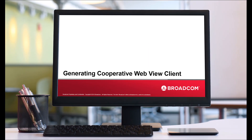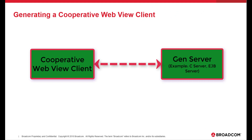Let's now generate a cooperative WebView client. A CHN server — for example, an EJB server or a C server — is required to establish communication with a WebView client. For details about generating an EJB server, see the relevant documentation or video.